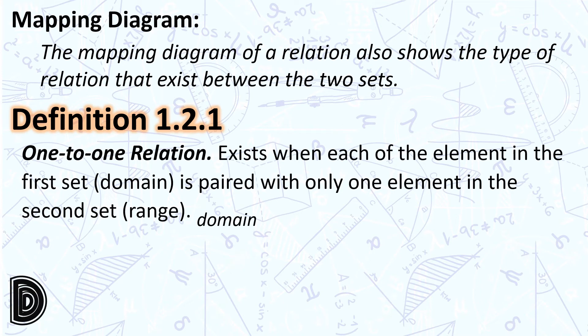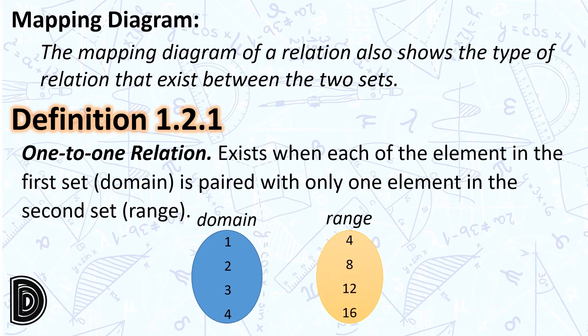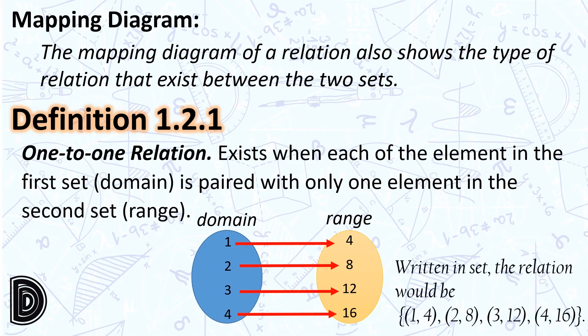We have the 1-to-1 relation. This exists when each element in the first set is paired with only one element in the second set. For example, the domain has elements 1, 2, 3, and 4, and the second set has elements 4, 8, 12, 16. Each element in the domain is paired with only one element in the range. Written in set notation, the relation would be (1,4), (2,8), (3,12), (4,16).